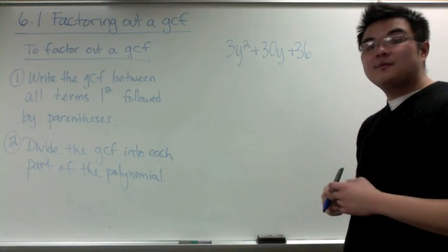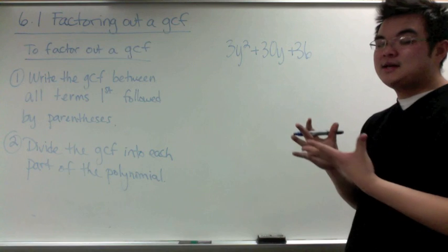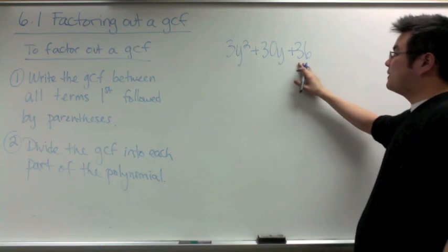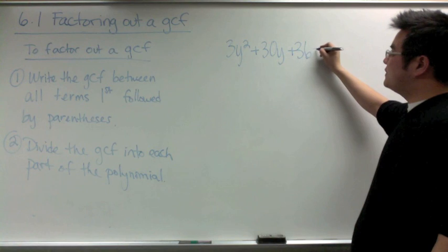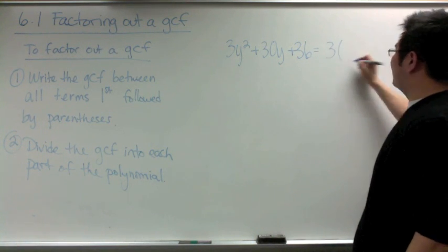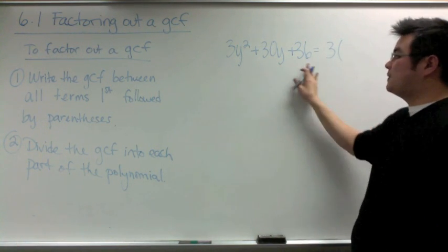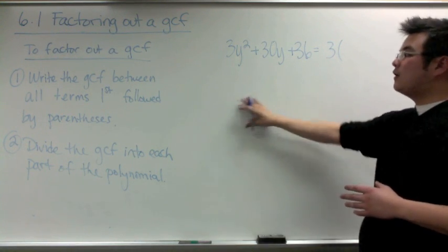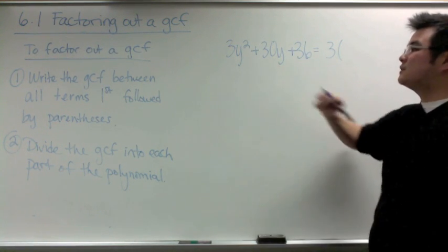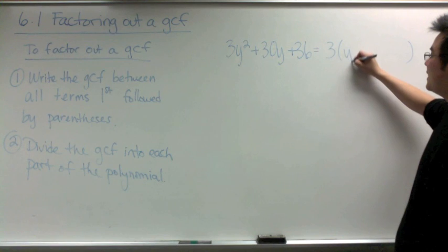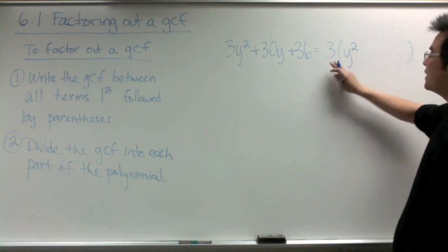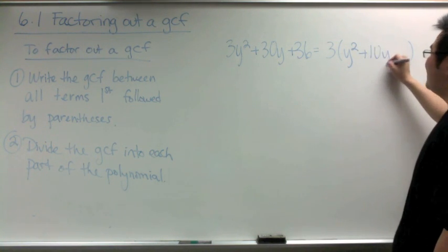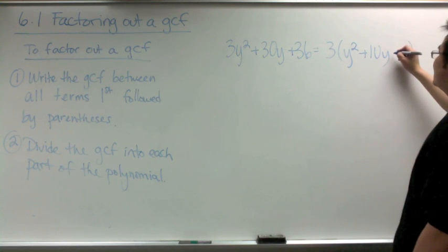In the next example we have a trinomial, and we factor it the same way as a binomial. The GCF between all three parts of 3y² + 30y + 36 is 3. Dividing 3 into all three parts: 3 goes into 3y² leaving y², 3 goes into 30y leaving 10y, and 3 goes into 36 giving 12. So the result is 3(y² + 10y + 12).